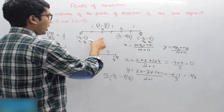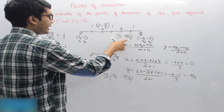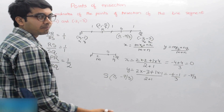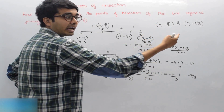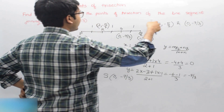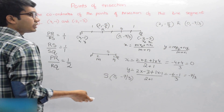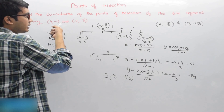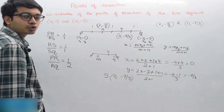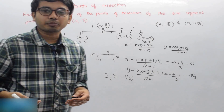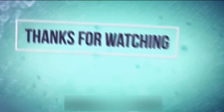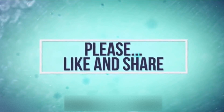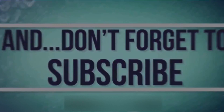So the coordinates of R are (2, -5/3) and S are (0, -7/3). Therefore, (2, -5/3) and (0, -7/3) are the points of trisection of the line segment joining (4, -1) and (-2, -3). This is the concept of points of trisection. Thank you. If you liked the video, please hit the like button, comment, and share it with your friends. Also don't forget to subscribe for all our future videos.